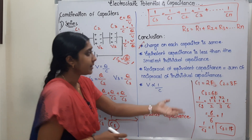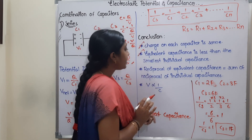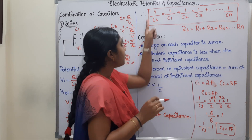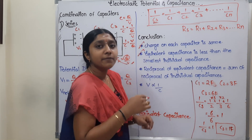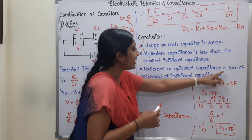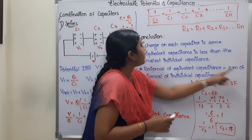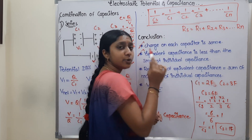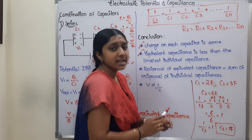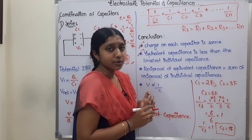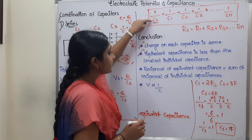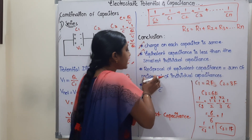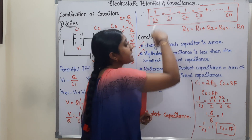Second point: the equivalent capacitance Cs is less than any individual capacitor. Third point: the reciprocal of equivalent capacitance — 1/Cs — is equal to the sum of the reciprocals of the individual capacitances. So 1/Cs equals the sum of 1/C1, 1/C2, 1/C3.